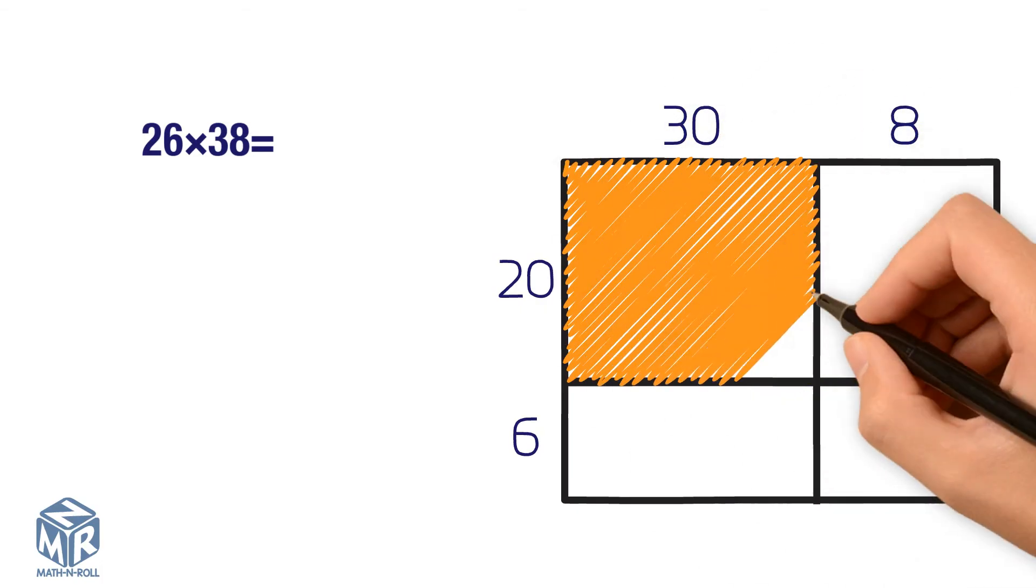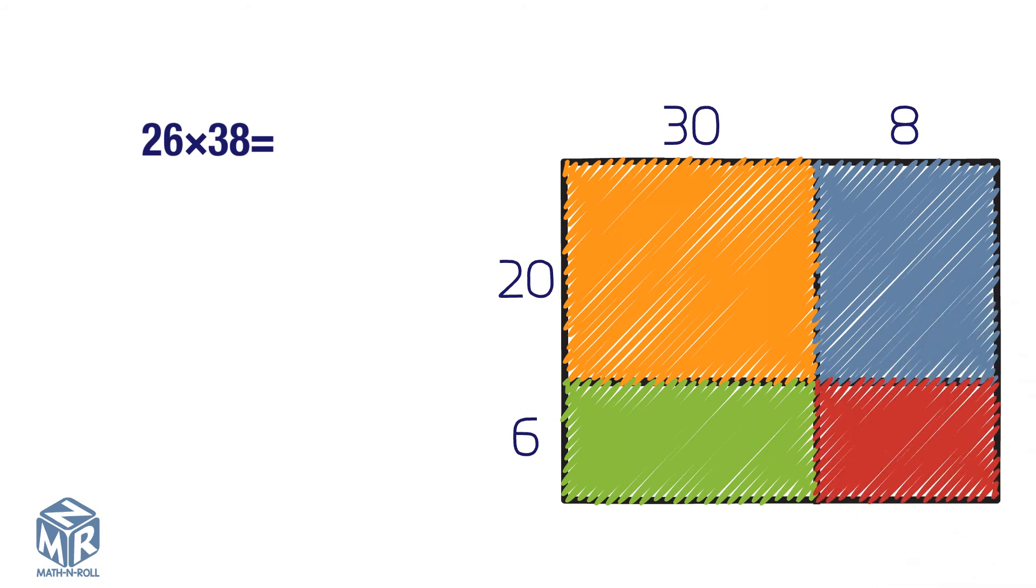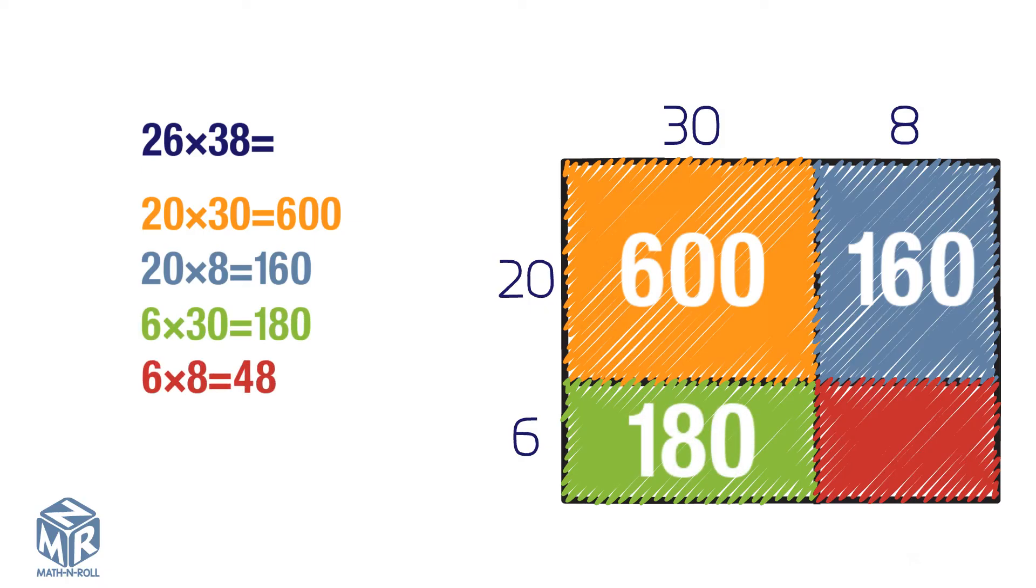Shade each smaller rectangle. Find the products for each of the smaller rectangles. 20 times 30 equals 600. 20 times 8 equals 160. 6 times 30 equals 180. 6 times 8 equals 48.